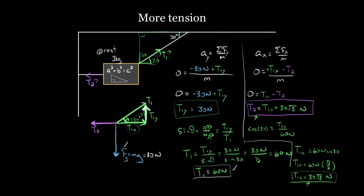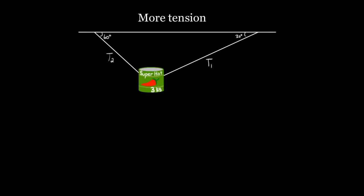So we figured it out: T1 is 60 Newtons and T2 is 30 root three Newtons. Now we're ready to tackle the super hot jalapeño problem. We'll do that in the next video.